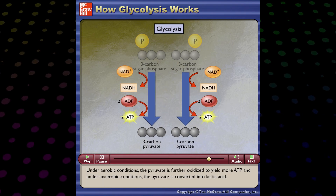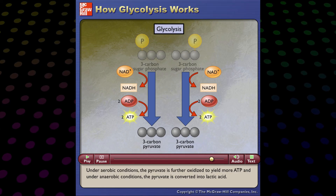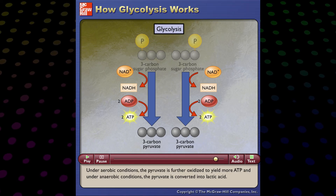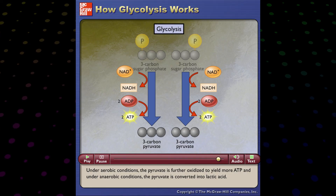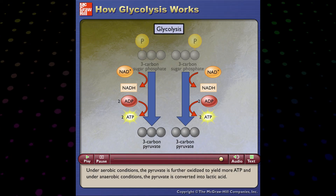Under aerobic conditions, the pyruvate is further oxidized to yield more ATP, and under anaerobic conditions, the pyruvate is converted into lactic acid.